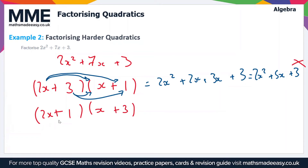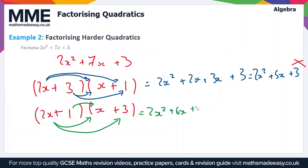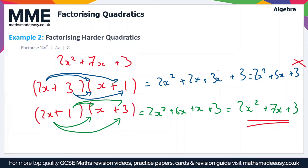Now for the second option (2x + 1)(x + 3): 2x times x gives 2x squared, 2x times plus 3 gives plus 6x, 1 times x gives plus x, and 1 times 3 gives plus 3. Collecting like terms we get 2x squared plus 7x plus 3, which matches our original quadratic — so this is our correct answer. That's all we need to do with this quadratic.